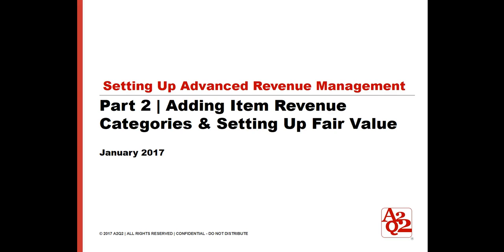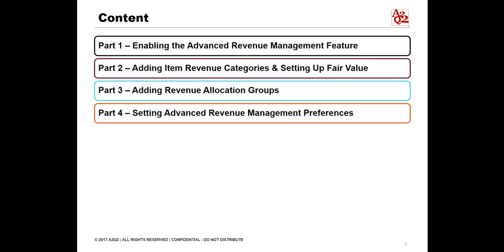Hello, this video is part two in a four-part series that will discuss setting up Advanced Revenue Management or ARM. Part two will provide an overview of adding item revenue categories and setting up fair value in the Advanced Revenue Management feature in NetSuite. Item Revenue Category is a classification for items that have similar characteristics and revenue allocation requirements. You can select an item revenue category when you are setting up a fair value price list instead of selecting individual items.